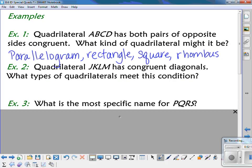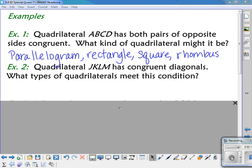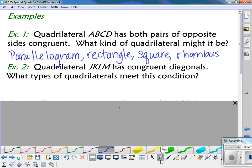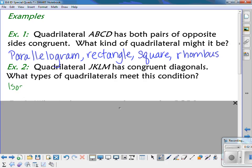Looking at the next example, quadrilateral JKLM has congruent diagonals. Well, again, if I go through my list of special quadrilaterals, trapezoids don't necessarily have congruent diagonals, but isosceles trapezoids do.